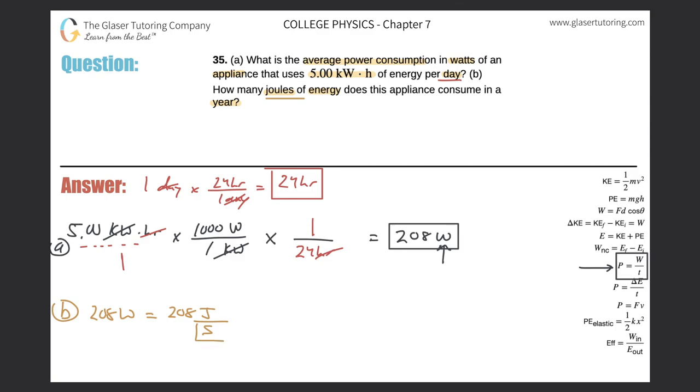So somehow I have to make these seconds go bye bye. So how am I going to cancel that time? Well, I must have been given a time somewhere, and oh my goodness we were, there it is. So how many joules of energy does it consume in a year? We know that this appliance consumes this many joules per second, so I want to know now how many joules it consumes per year. We just got to get rid of the seconds on the bottom and replace it with year.